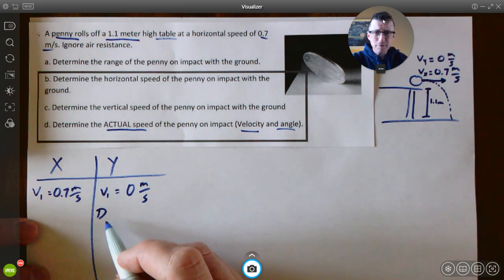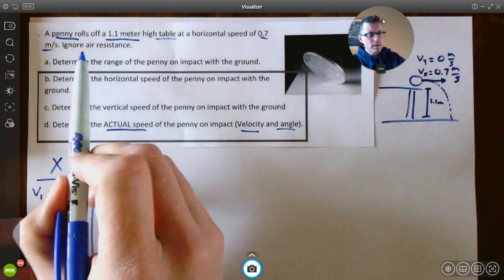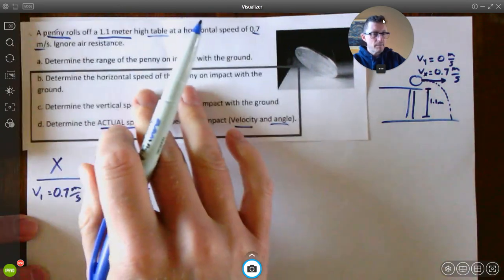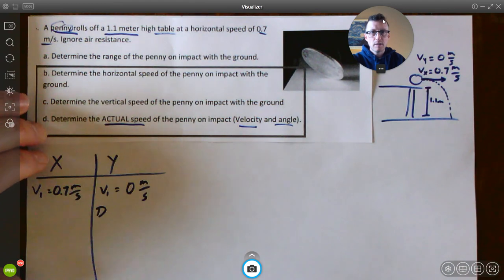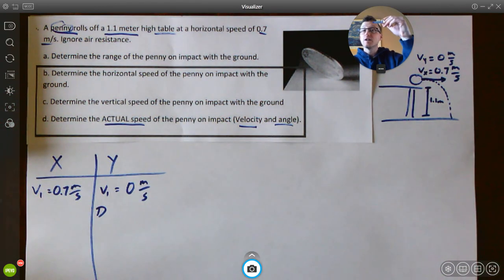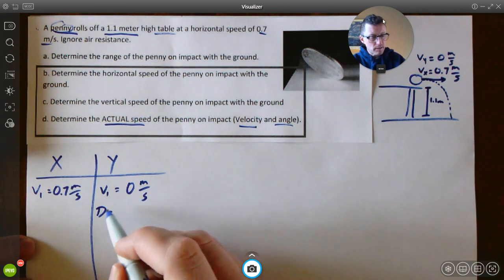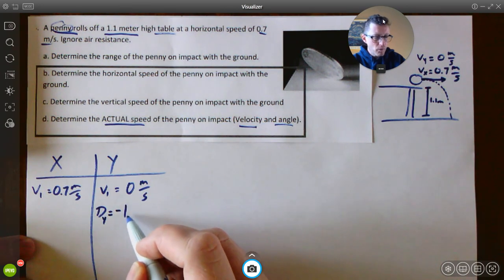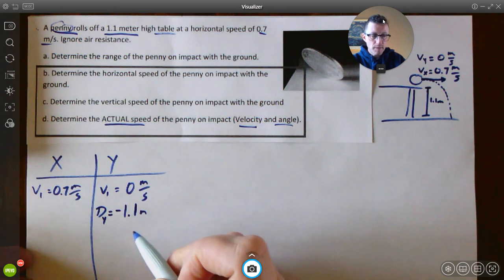Now, careful here. That number is telling you how tall the table is. But what we're really trying to focus on is the penny, right? We're really trying to say, what is the penny? The penny is going to be falling downward. So how do we indicate down? We have to have that negative number on our distance. So our distance, our DY is going to be a negative 1.1 meters.